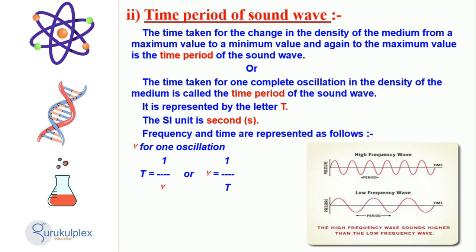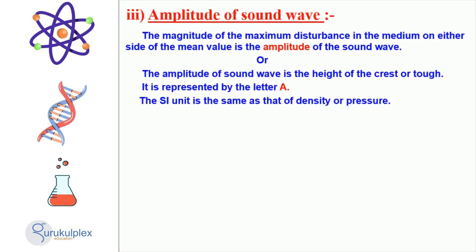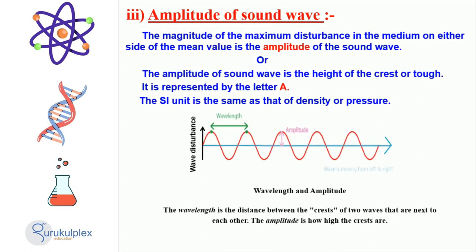The relationship between frequency and time period can be expressed as 1 over T equals the frequency. Power of sound depends on the amplitude and wavelength of a sound wave. Amplitude is the size of disturbance of a medium surrounding the average value, while wavelength is the range between two consecutive crests of a wave.